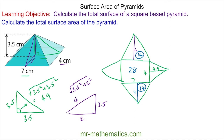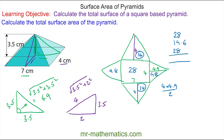And the triangle on the side will be 4 multiplied by 4.9 divided by 2, which is 9.8 — the same on the other side. So the total surface area: the top and bottom triangles add up to 28, plus the left and right triangles which add up to 19.6, and the rectangle in the middle which is another 28.